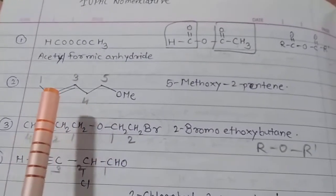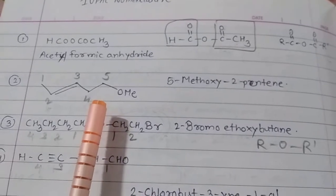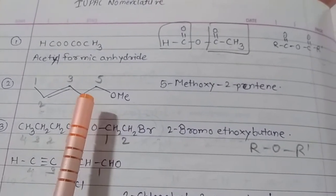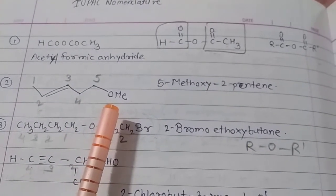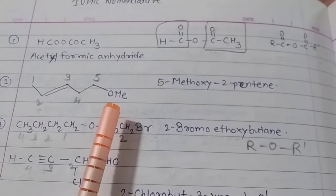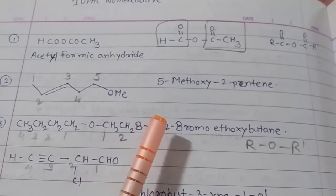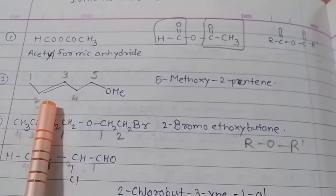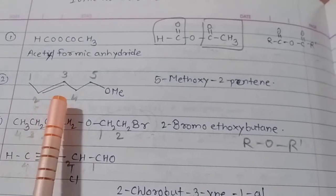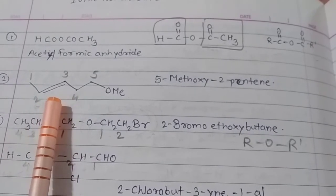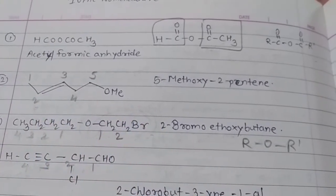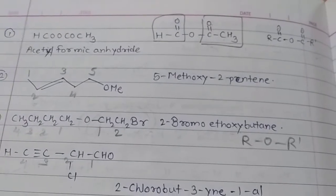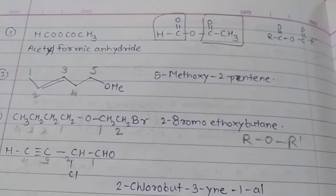The second example has a total of five carbons. On the fifth carbon there is a substituent which is methoxy, so five-methoxy. Then in the second and third carbon there is a double bond. So the name is five-methoxy-2-pentene, or we can say five-methoxy-pent-2-ene.